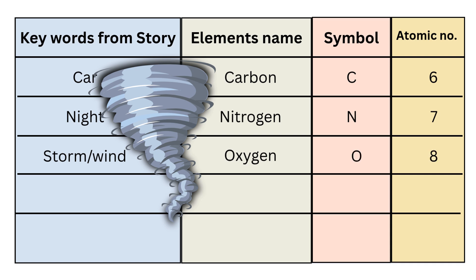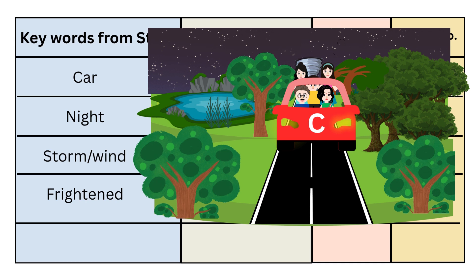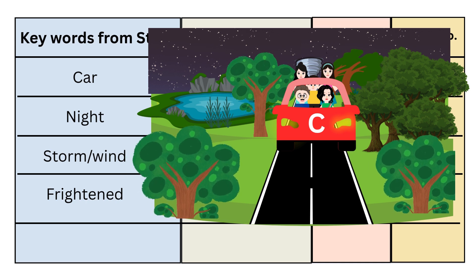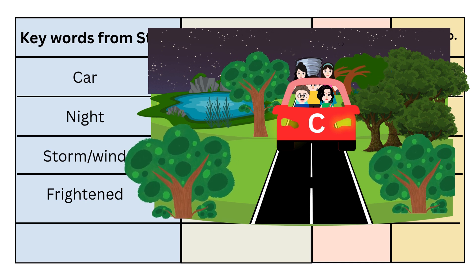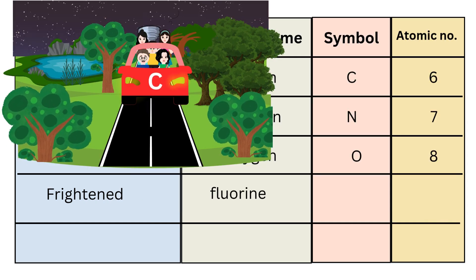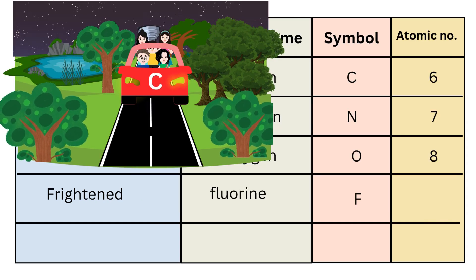Because of the storm, everyone got frightened. So your next key word to remember is 'frightened', and from that you have to remember the ninth element name, that is Fluorine. Symbol is F, and atomic number is 9.